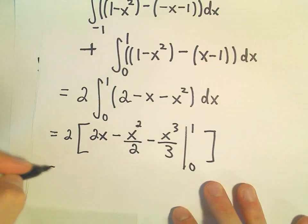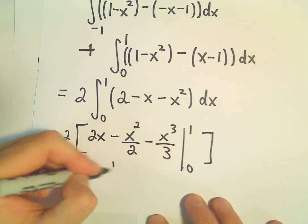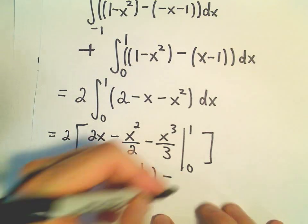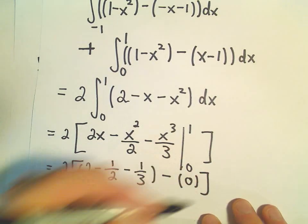Well, this one's not too bad. If we plug in x equals 1, we'll just get 2 minus 1 half minus 1 third. That would be our upper limit. Notice the lower limit, since we're plugging in x equals 0, we would just get a bunch of 0s.